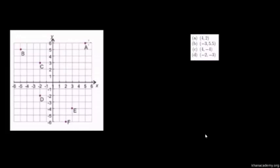So let's figure out the coordinates of these points. You have this point right here, A. Its x-coordinate — you just drop down to where it intersects the x-axis — x is equal to 5. And y is equal to 6. So the point is (5, 6).